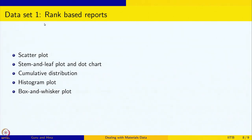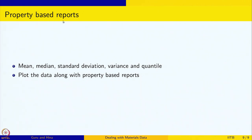For data set 1, let us do the rank-based reports. We have learnt about several rank-based reports: scatter plot, stem and leaf plot, dot chart, cumulative distribution, histogram plot, and box and whisker plot — we are going to do all these rank-based reports. For data set 1 we are also going to do the property-based reports: mean, median, standard deviation, variance, and quantile. Finally, we are going to plot the data and indicate these property-based values on the plot to have a better understanding of the data. That is what we are going to do in this session — for data set 1, and we will come back to data set 2 in the next one.